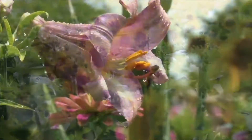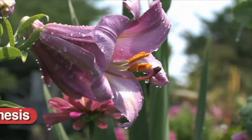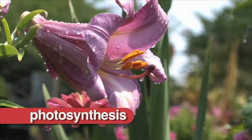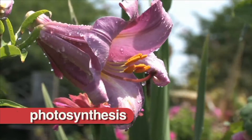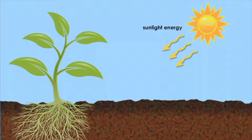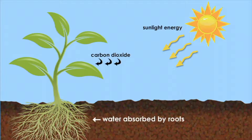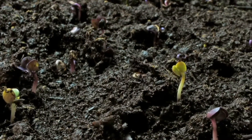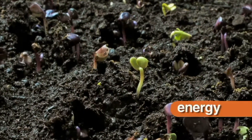Plants use a process called photosynthesis to produce glucose. In photosynthesis, the plant absorbs energy from the sunlight, water, and carbon dioxide. Plants use photosynthesis to get energy.